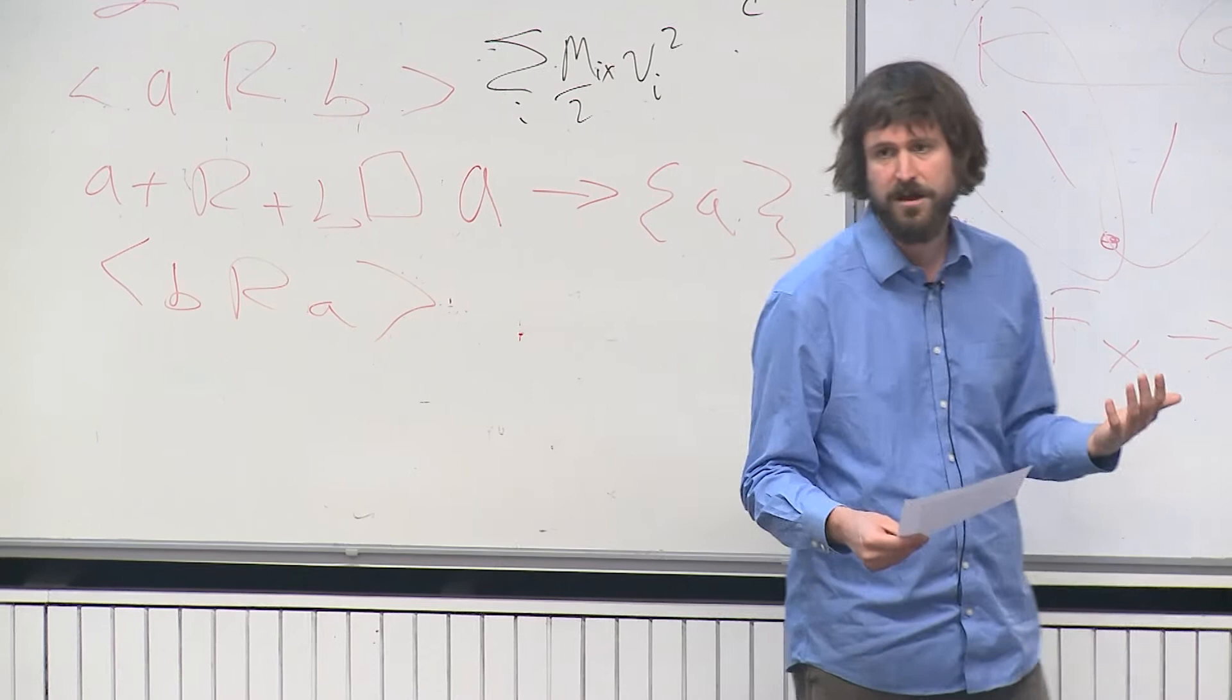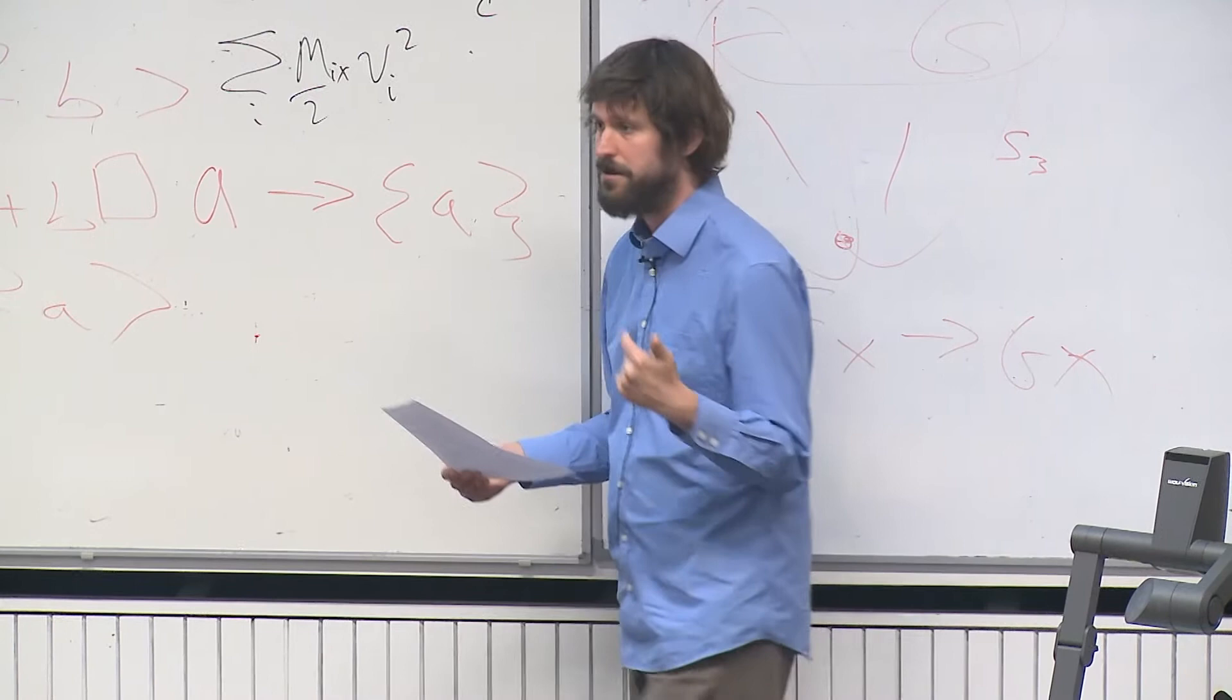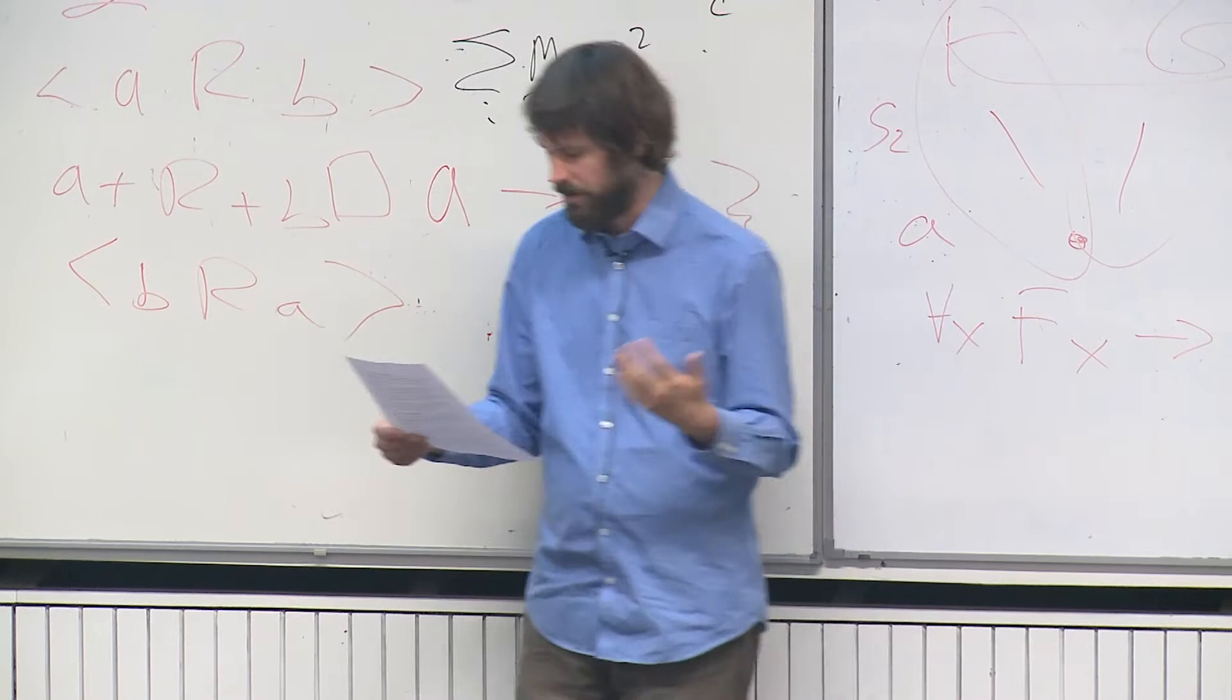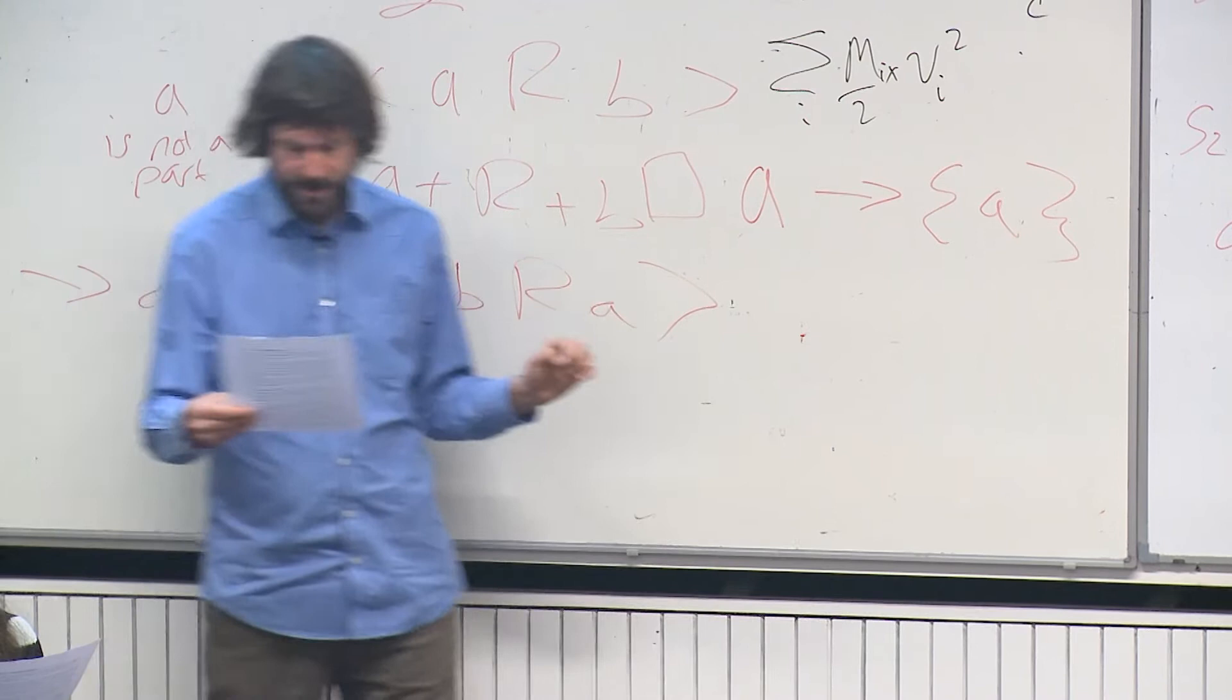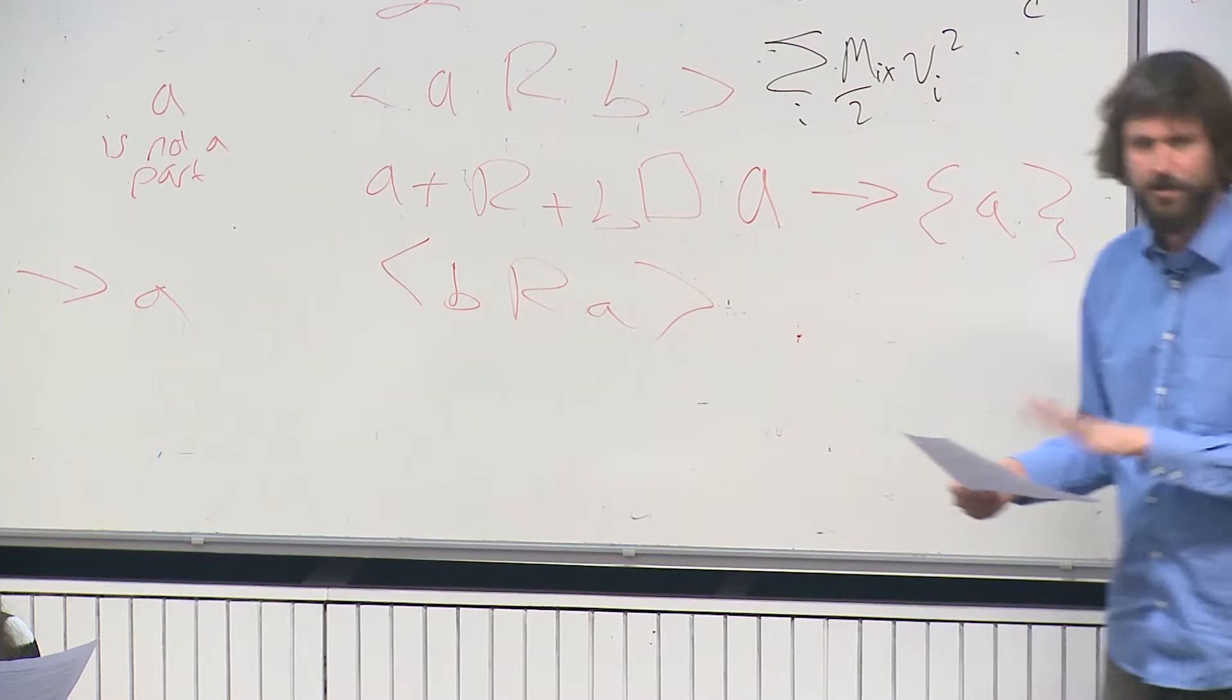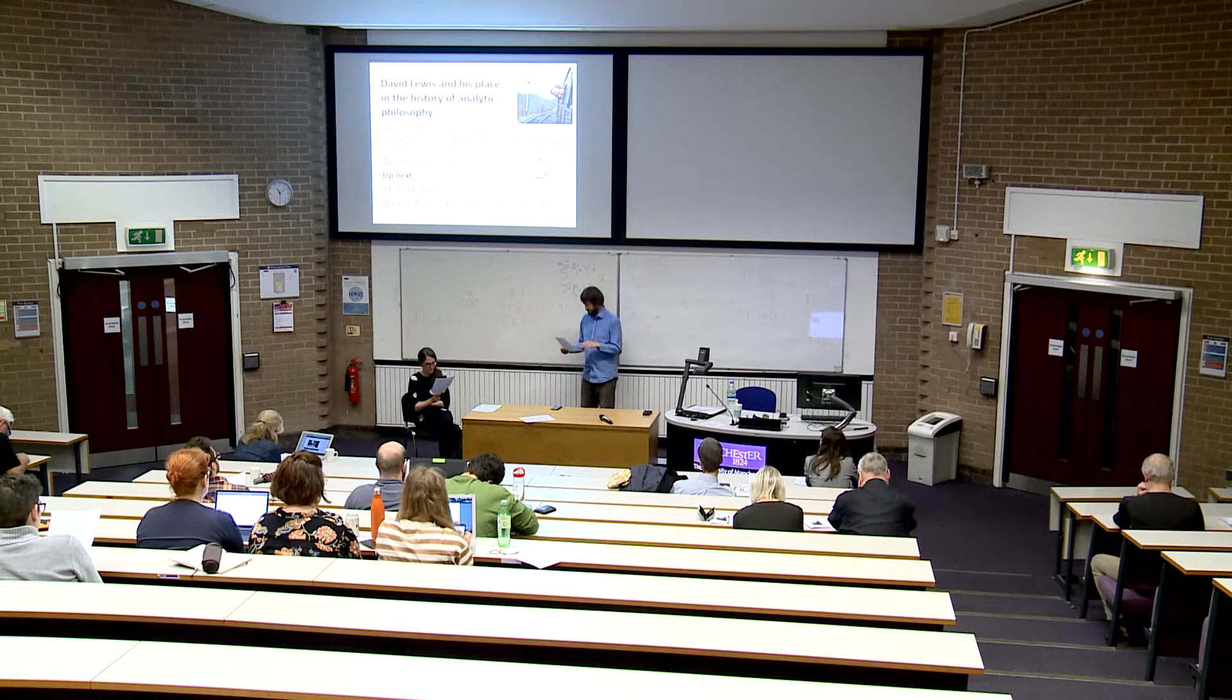But Lewis denies that. He says that recombination is not by itself enough to get plenitude, and there's this passage from page 92 at the end of section one on the handout. He's saying that because there are alien possibilities, possibilities in which there are properties instantiated that aren't instantiated at the actual world, we can't get the full plenitude of possibilities just by rearranging non-alien ones. So the principle of recombination falls short of capturing all the plenitude of possibilities. And there are various things to ask about why that is, but I'm going to take that to be motivation to go looking for some other criterion of plenitude.